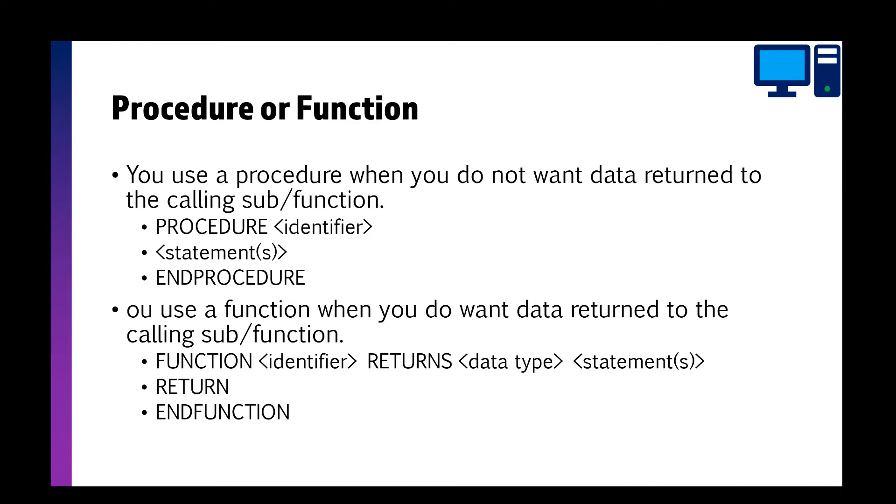So you use a procedure when you don't want data returned. So for example, you might just do something, output some sound, a piece of text, or save it into a database, but you don't actually get anything in response. And you use a function when you do want data. So it might be a calculation and it returns a value. So it might add up two numbers and give you the result.